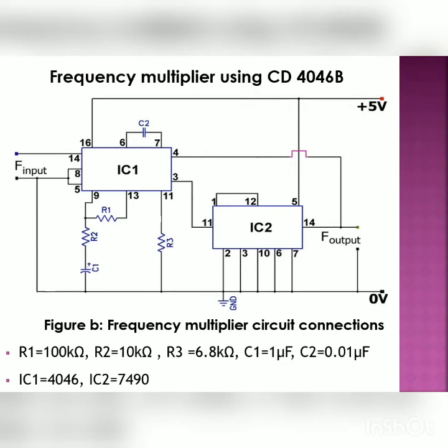Now, the component values we will have from the design value of FO which is coming at 5 kilohertz. Then, if you will refer the characteristics given by the manufacturer in the datasheet, which is the characteristic of the center frequency versus the timing capacitor for different values of R1 and the supply voltages.